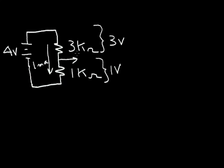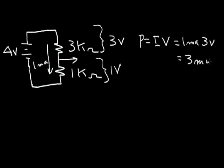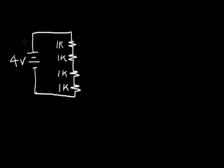If I want to calculate the power in these two resistors, I know that power equals current times voltage. For the 3k resistor: one milliamp times three volts equals three milliwatts — a milliwatt being a thousandth of a watt. The power dropped across the 1k resistor is one milliamp times one volt, which equals one milliwatt.